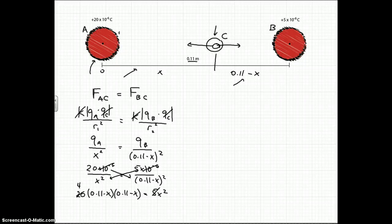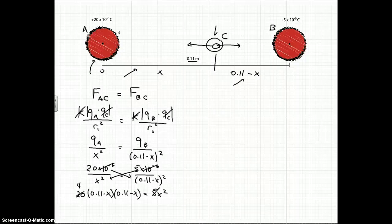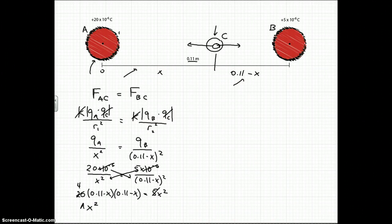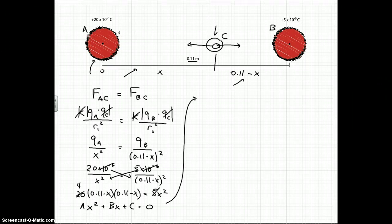So now all we have to do is we have to get this equation that we have here in terms of what we would use for the quadratic formula. So we would want it in something like this. Ax squared plus Bx plus C is equal to 0. So now we just have to rewrite this in that form.